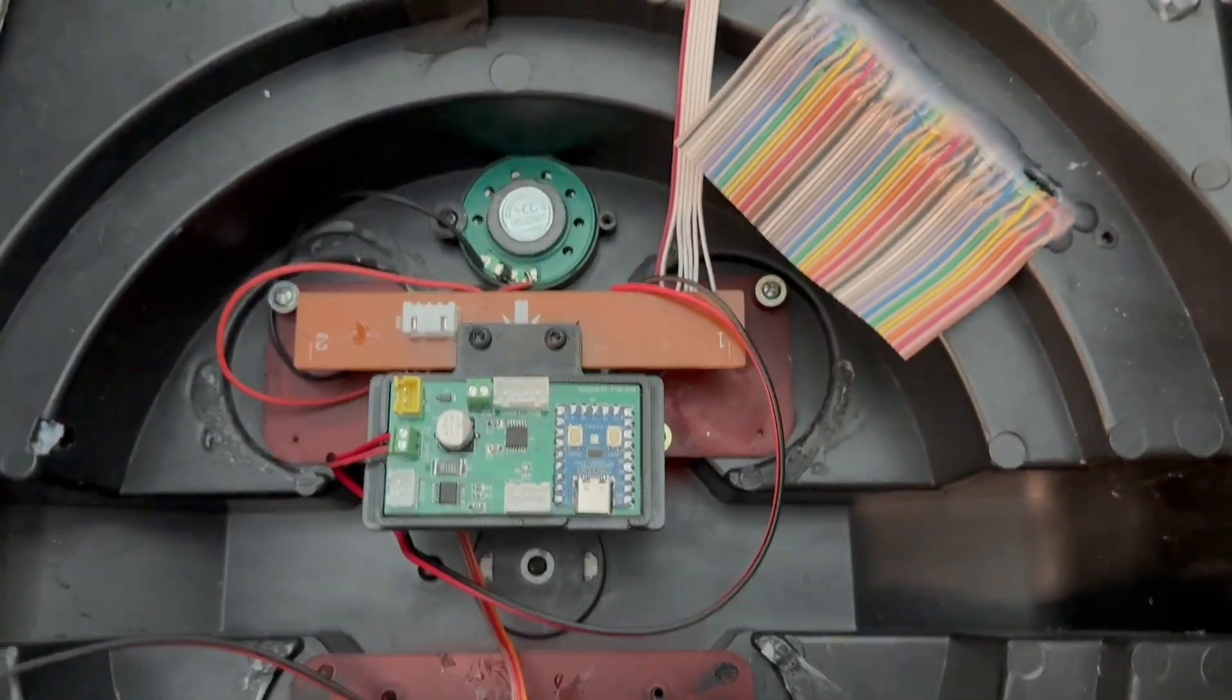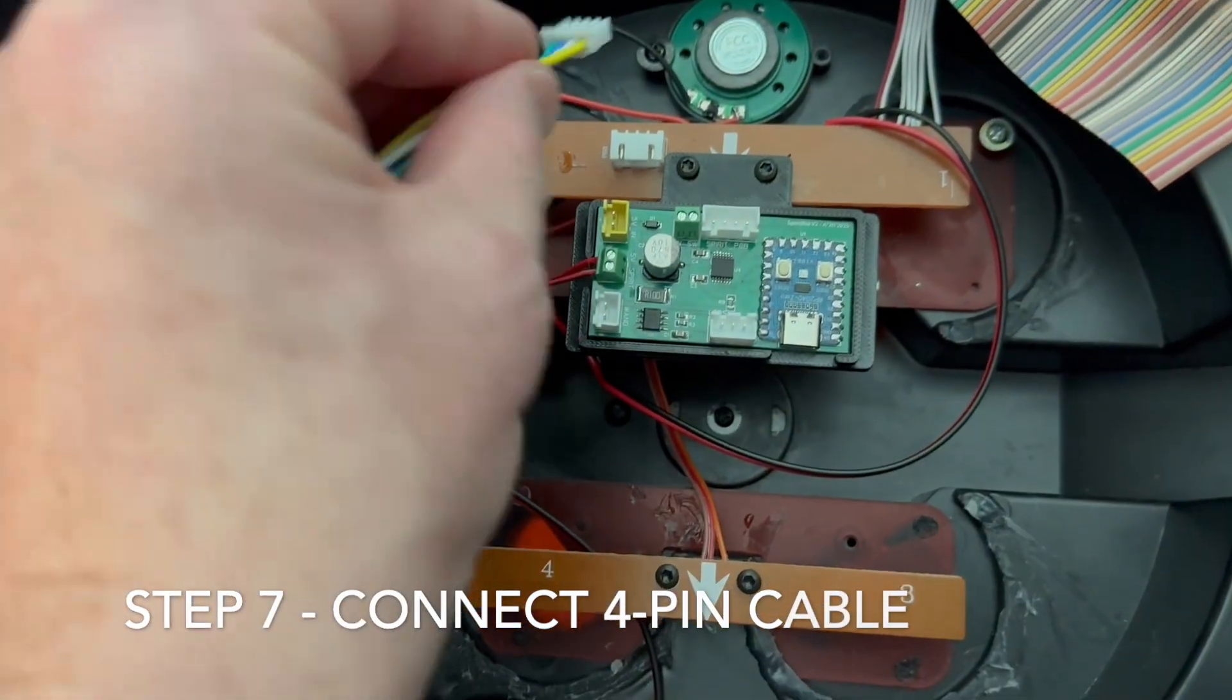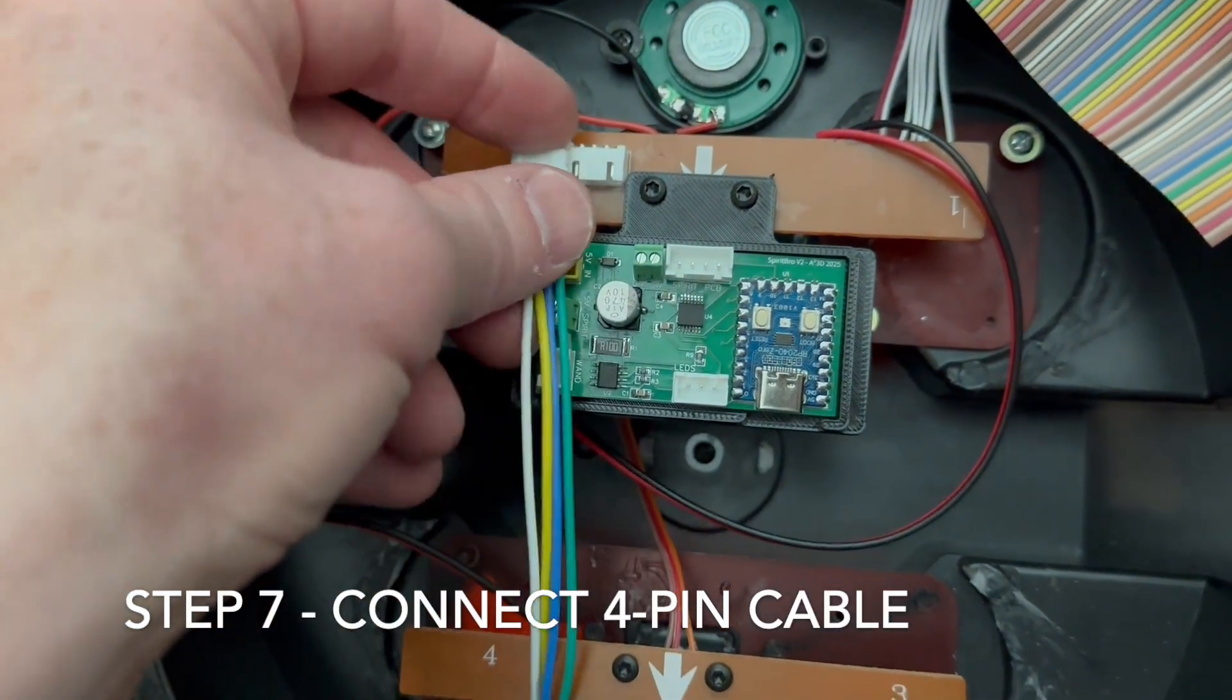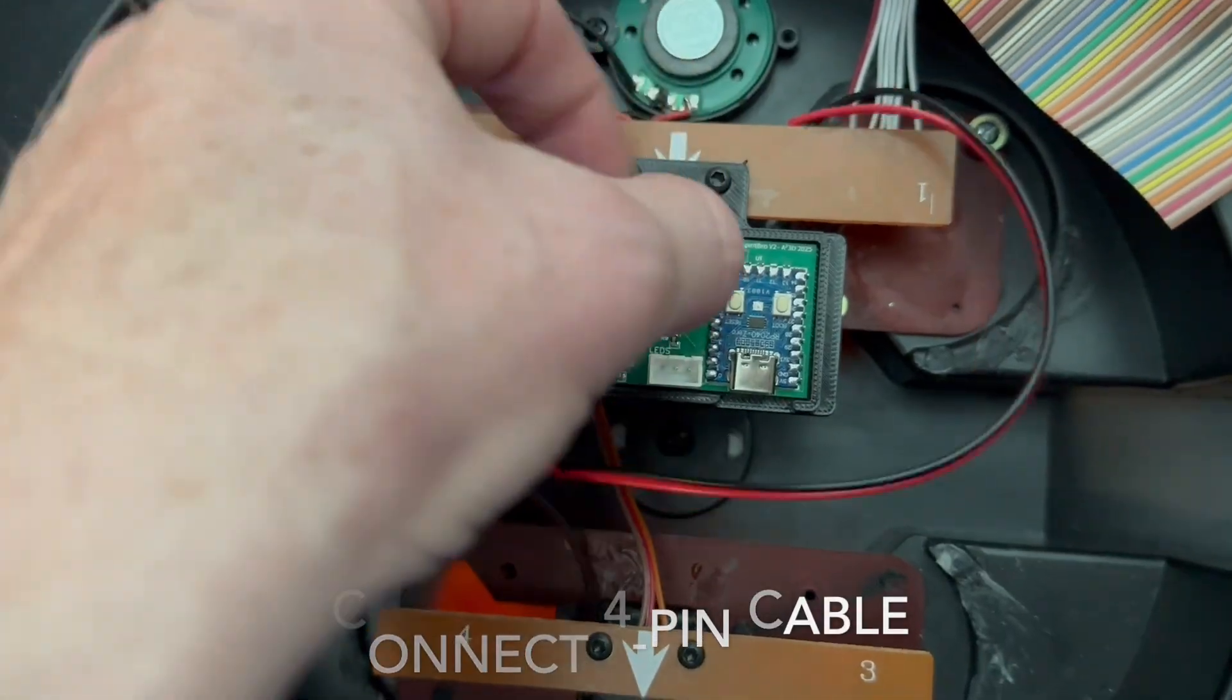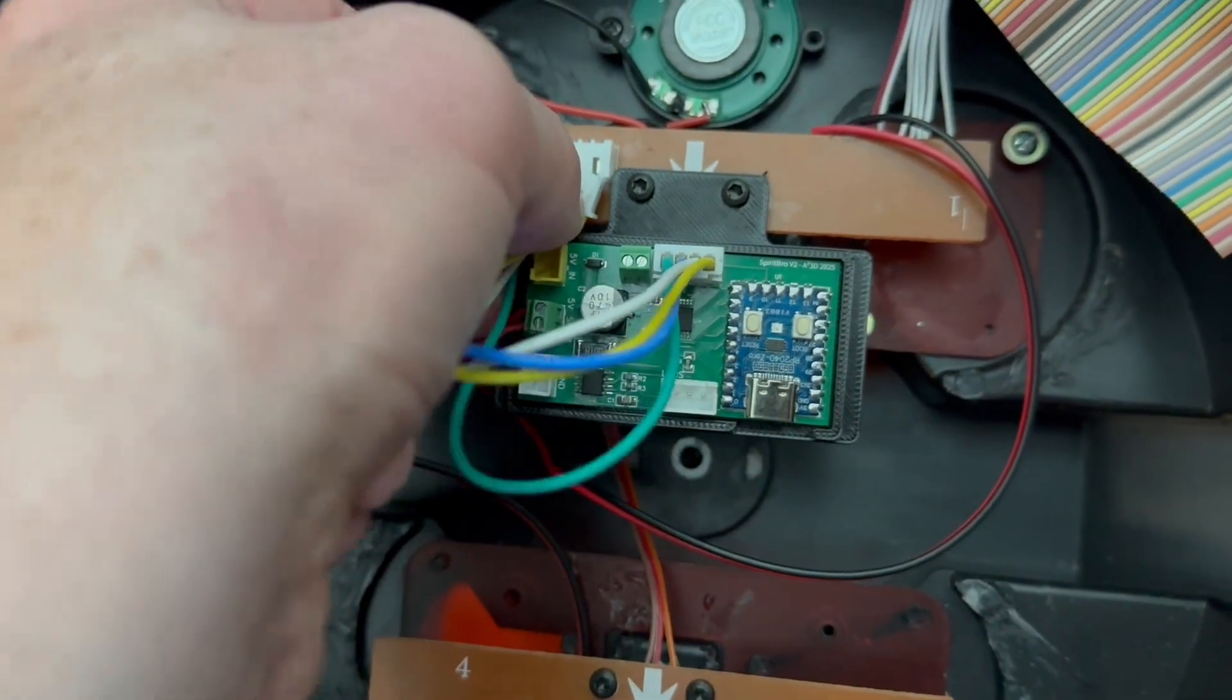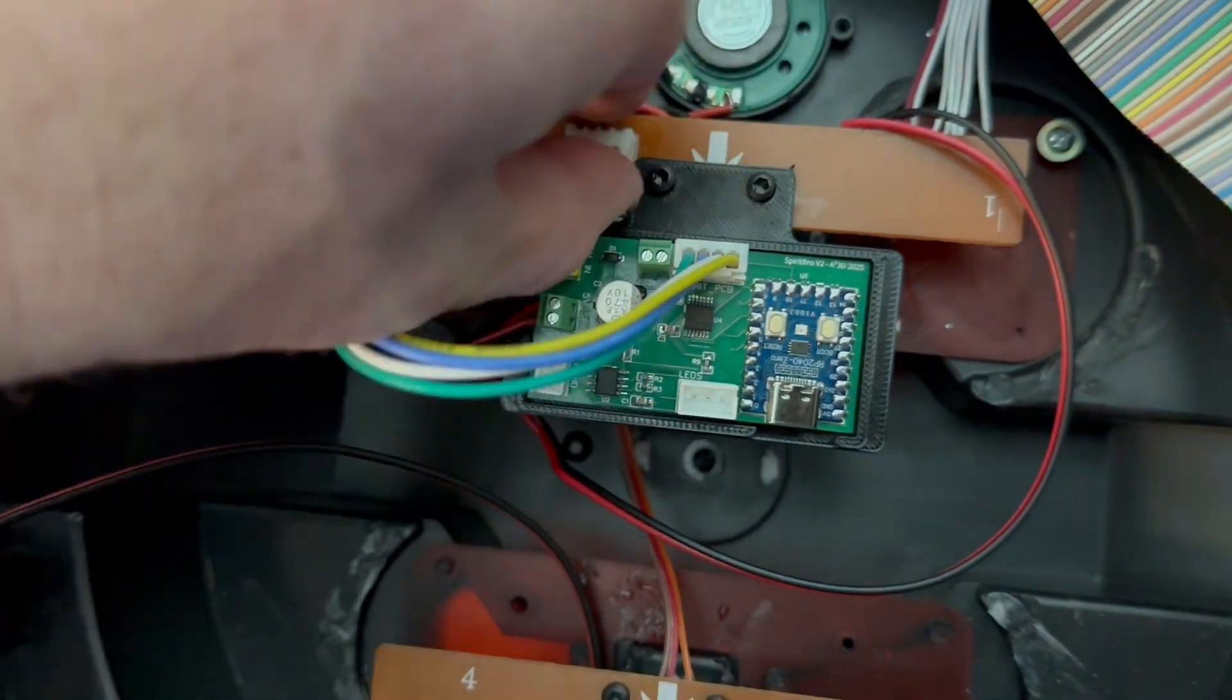Using the included 4-pin to 4-pin adapter cable, you will go ahead and attach that one side to the factory board and then the other side to our Spirit Bro adapter. This can be tricky to do and you can actually plug this in before installing the board should you desire.